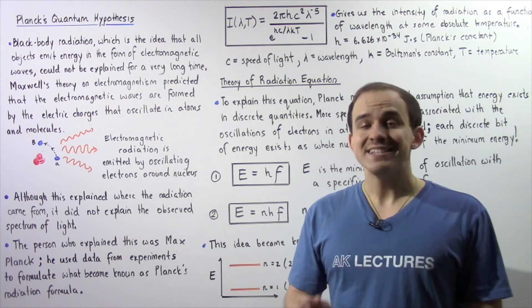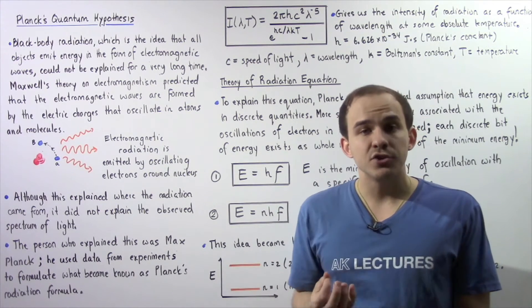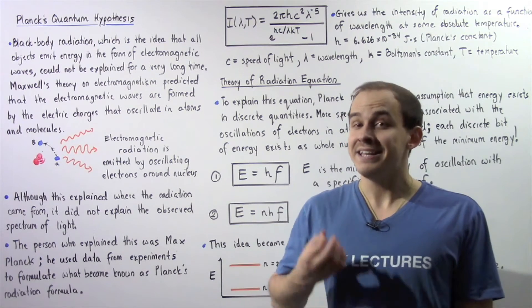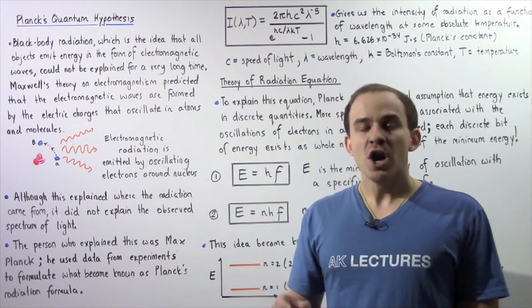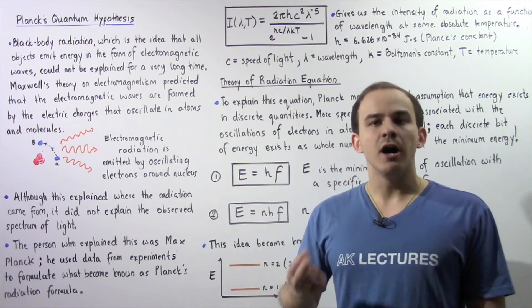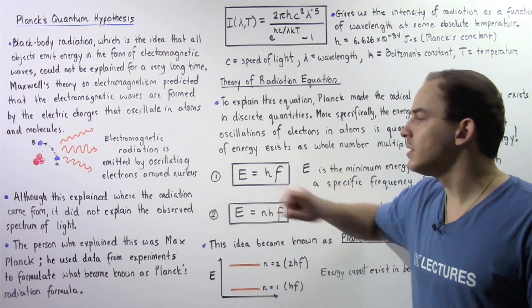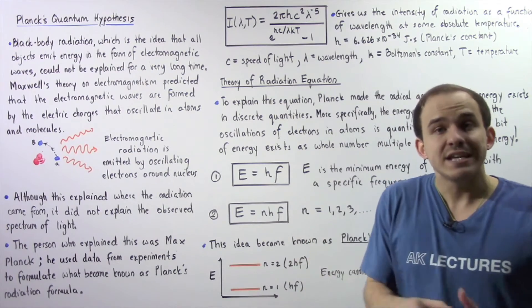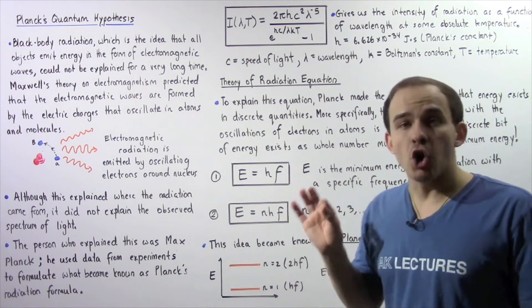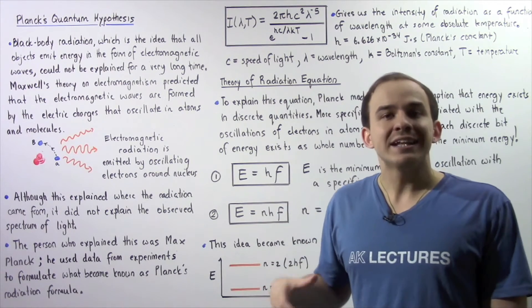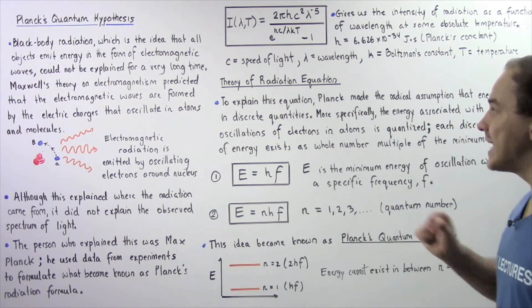However, what Max Planck assumed is that energy exists as a discrete quantity. So energy is quantized, and he said that there exists a minimum quantity of energy for any frequency of oscillation, and this is given by the following equation labeled as one. In fact, if energy is greater than this minimum value, it can only be greater by a factor that is equal to some positive integer.